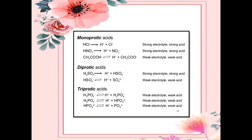Monoprotic acids include HCl, HNO3, and acetic acid. Diprotic acids include H2SO4 and HSO4. Triprotic acids include H3PO4, H2PO4, and HPO4.